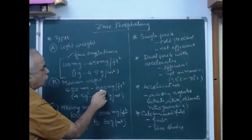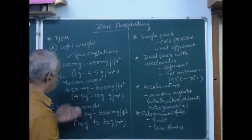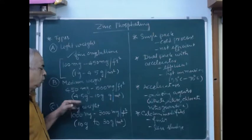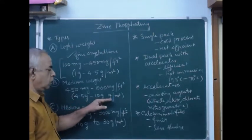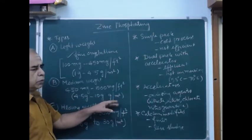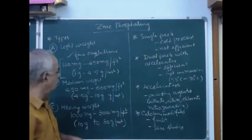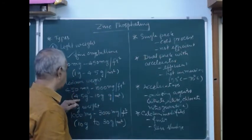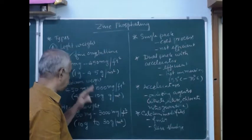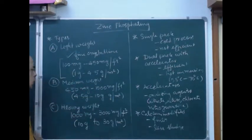450 to 1000 milligrams per square foot. In terms of grams, 4.5 to 10 grams per square meter. When you take one square meter component, it will coat 4.5 to 10 grams. This is known as medium weight.